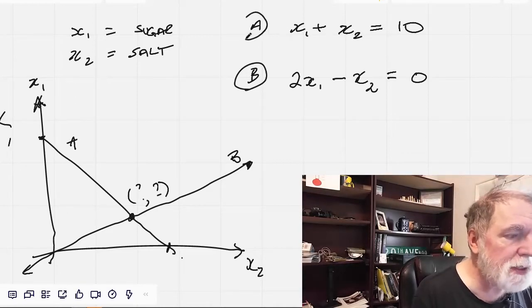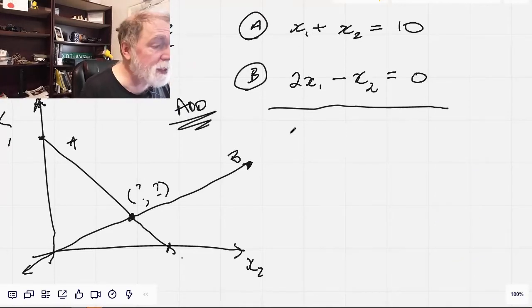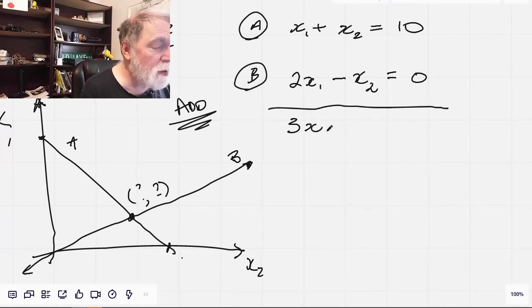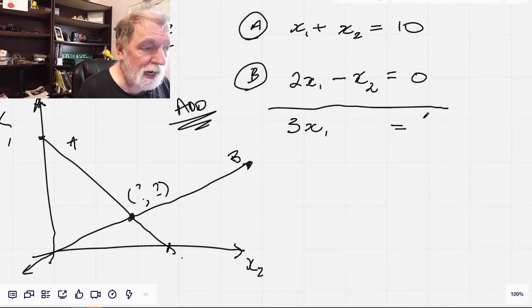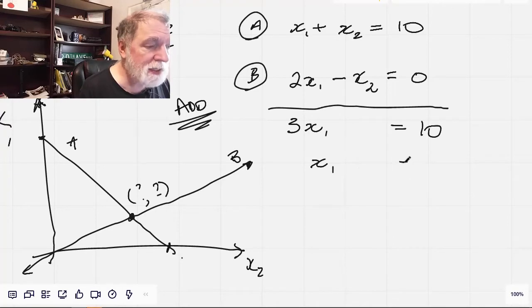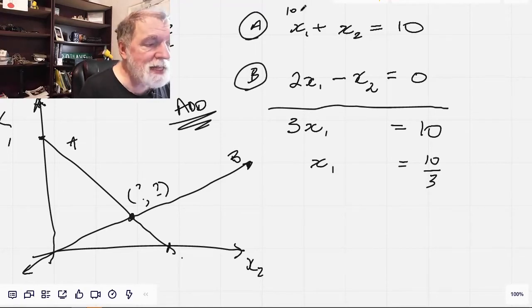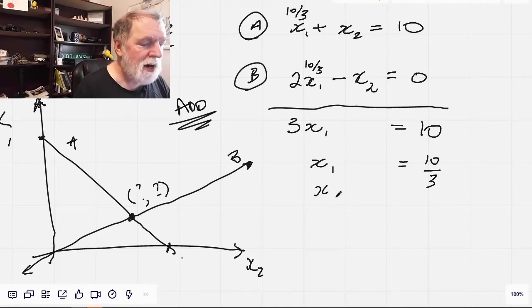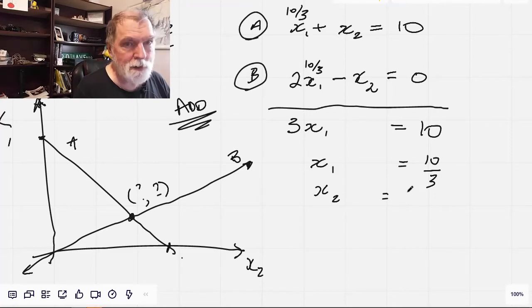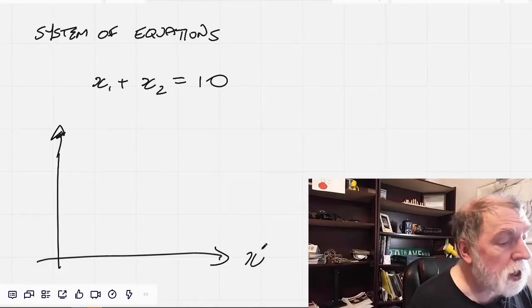Now we can use some algebra to figure out what that one place is. Let's simply take these two equations and add them. x sub 1 plus 2x sub 1 is 3x sub 1, and x sub 2 minus x sub 2 is 0. They're just going to cancel each other out. And then 10 plus 0 is 10. That means that x sub 1 is 1 3rd of 10 or 10 3rds. We can put that information into either one of these equations, do a little bit more algebra, and find out that our salt is in the amount of 20 3rds. We have solved this system of equations.